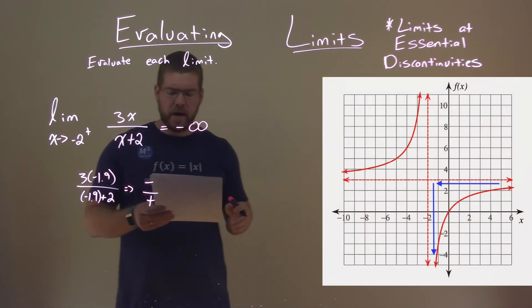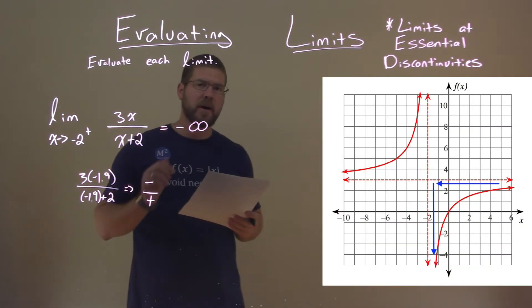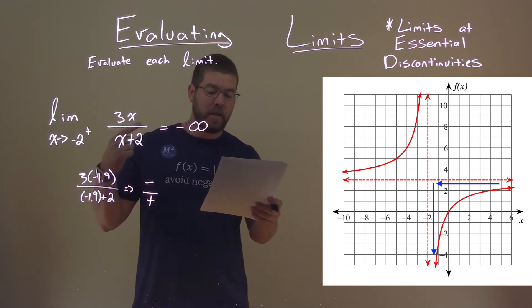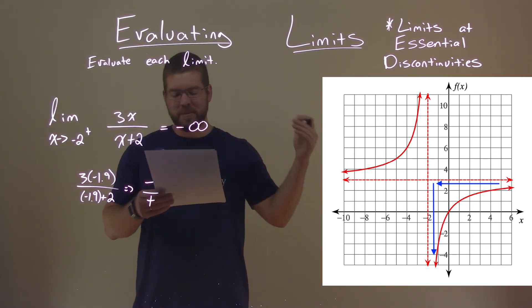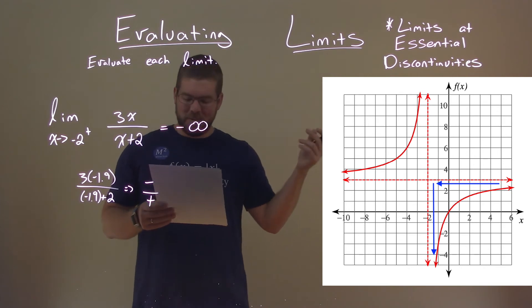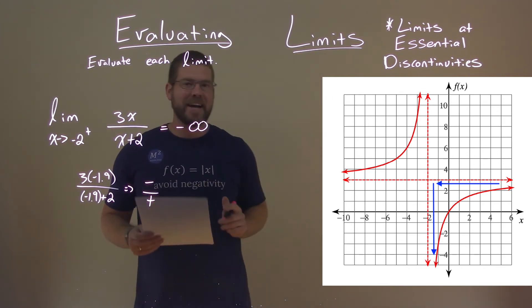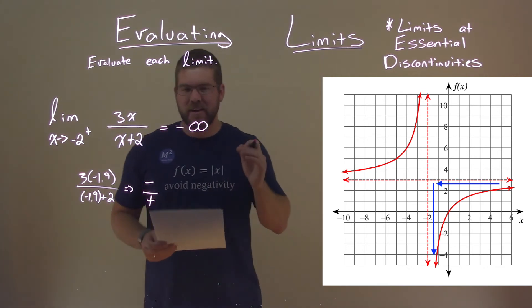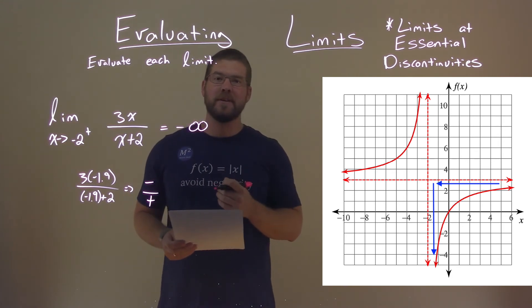And we can see that in our graph. Look at negative 2, right? X value being negative 2 right there. And as we approach that from the right, it's going down to negative infinity. So our final answer here is negative infinity.